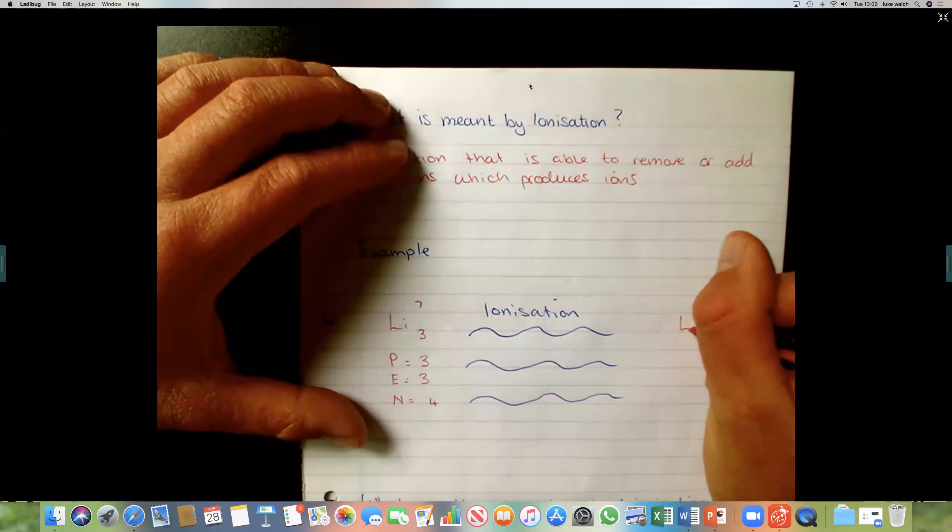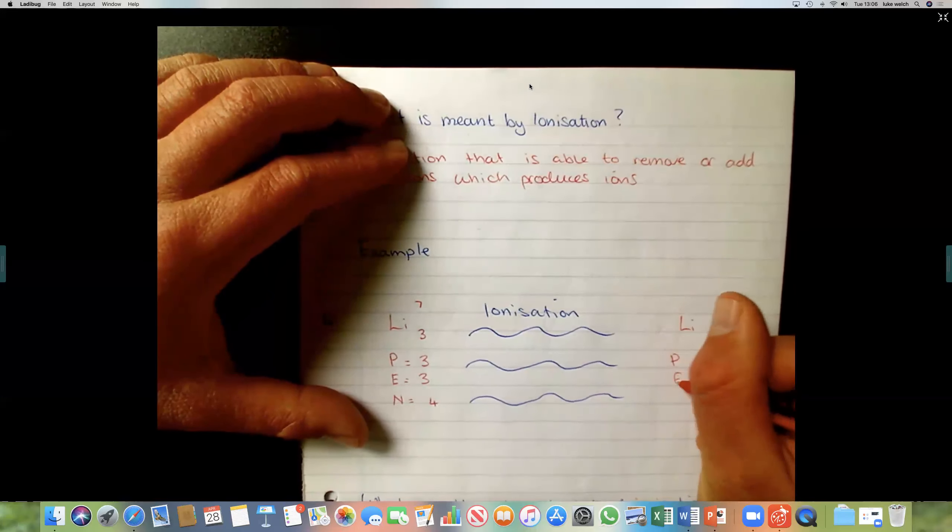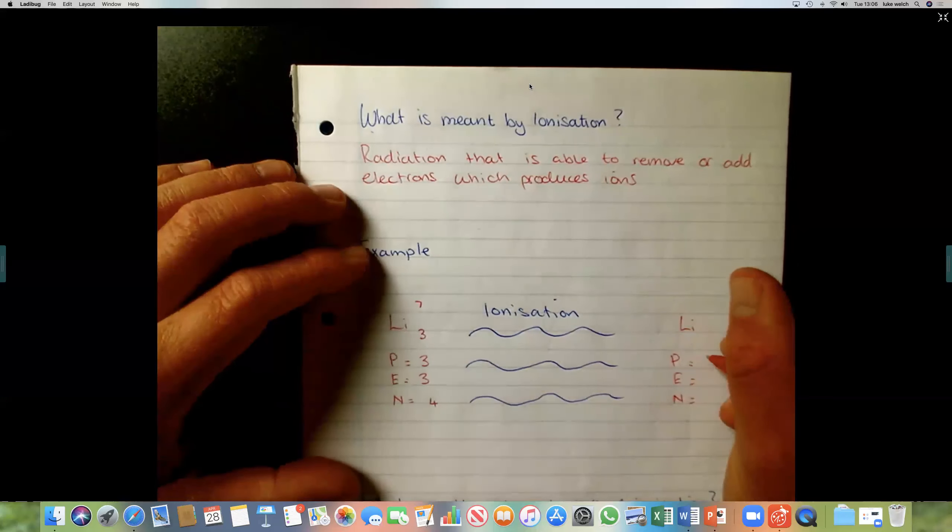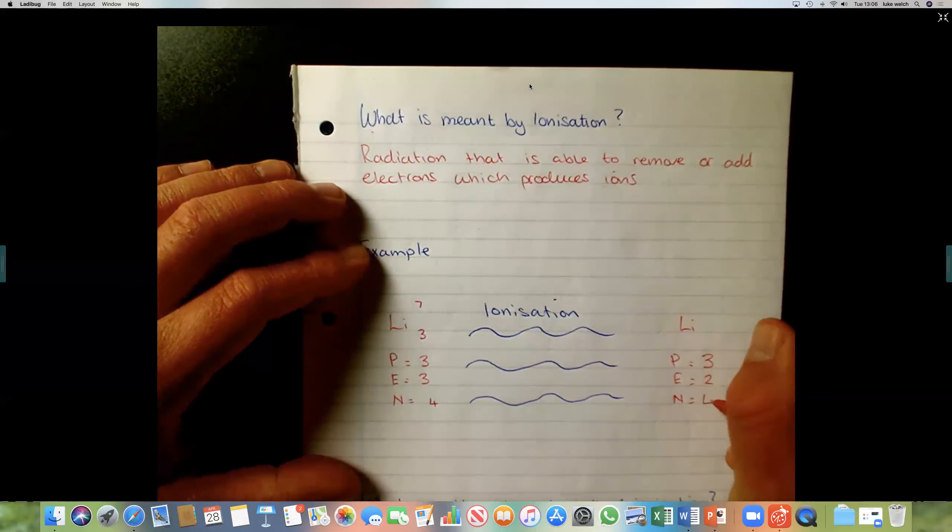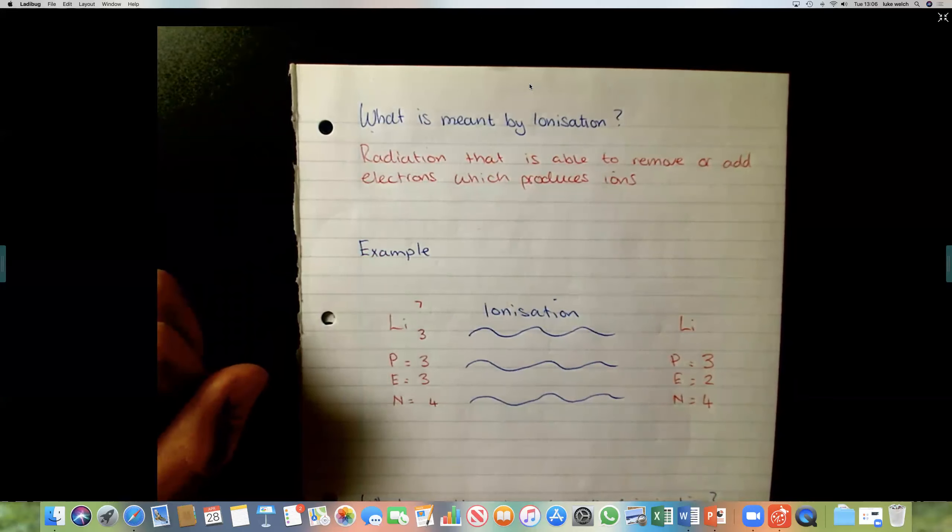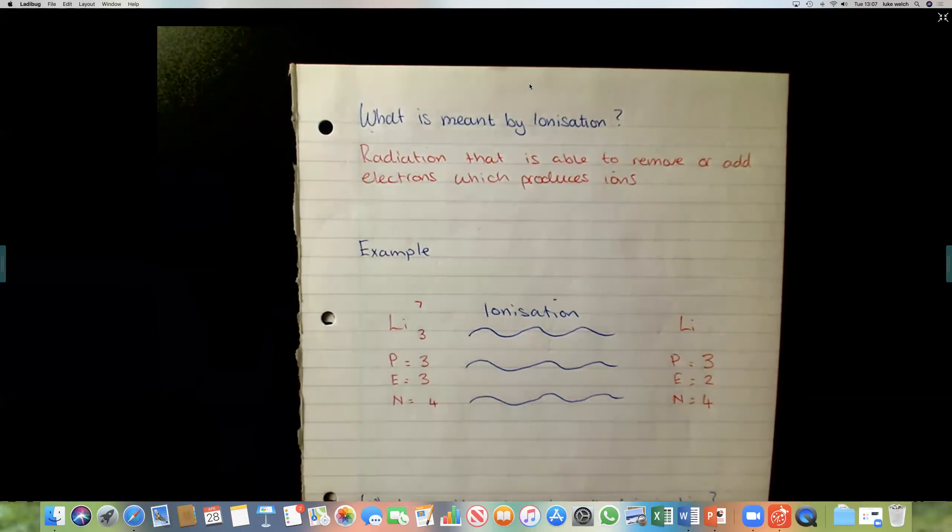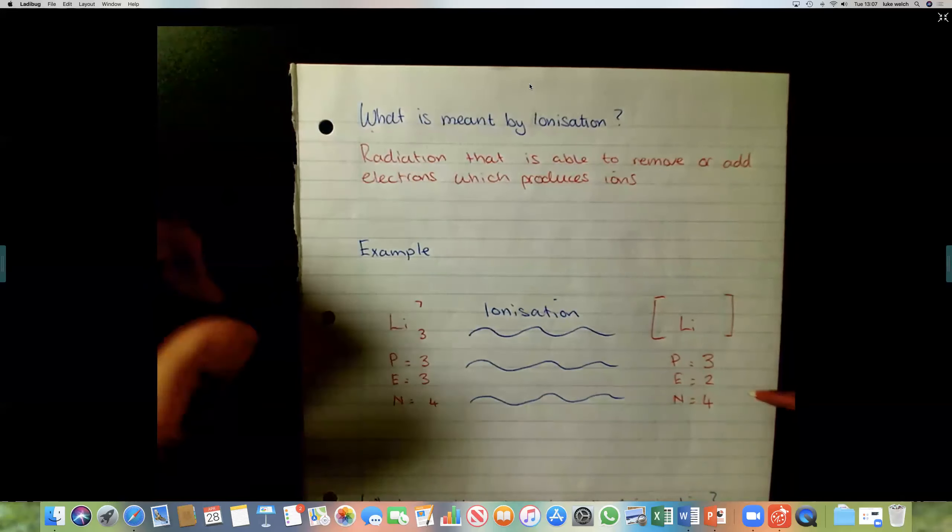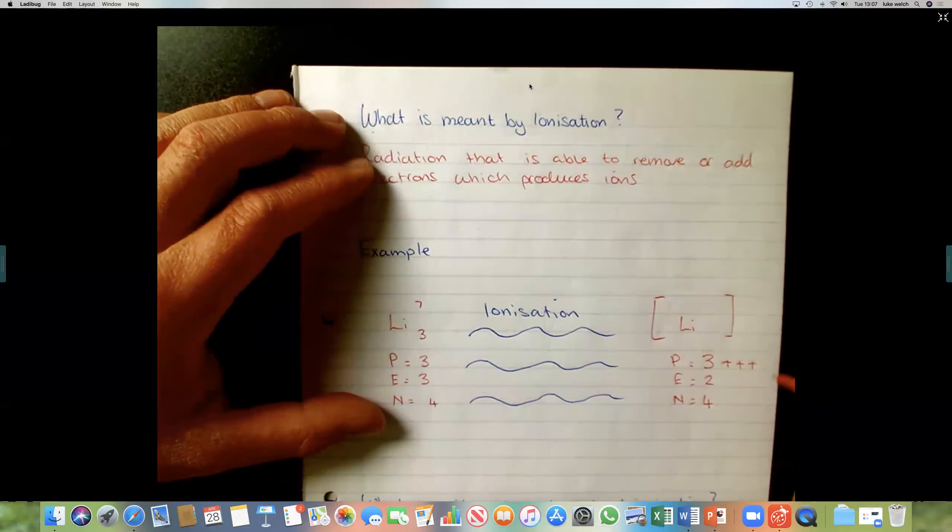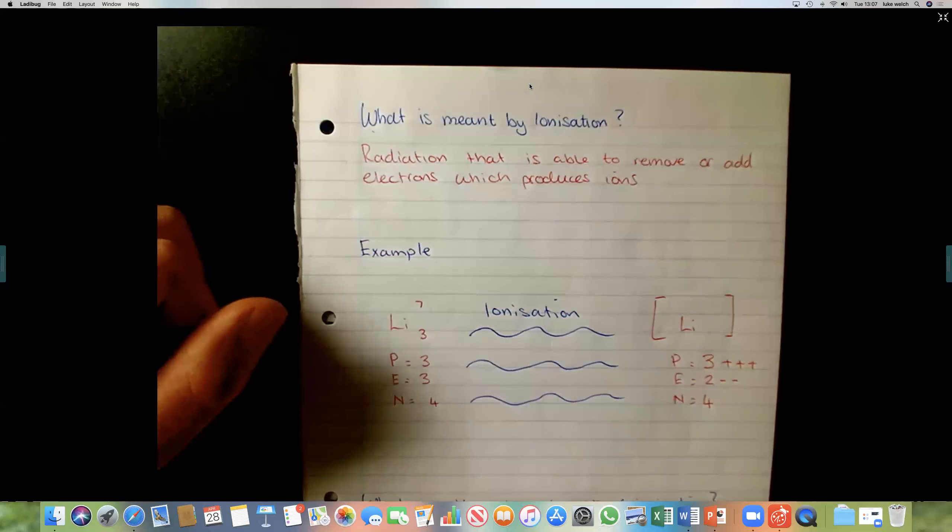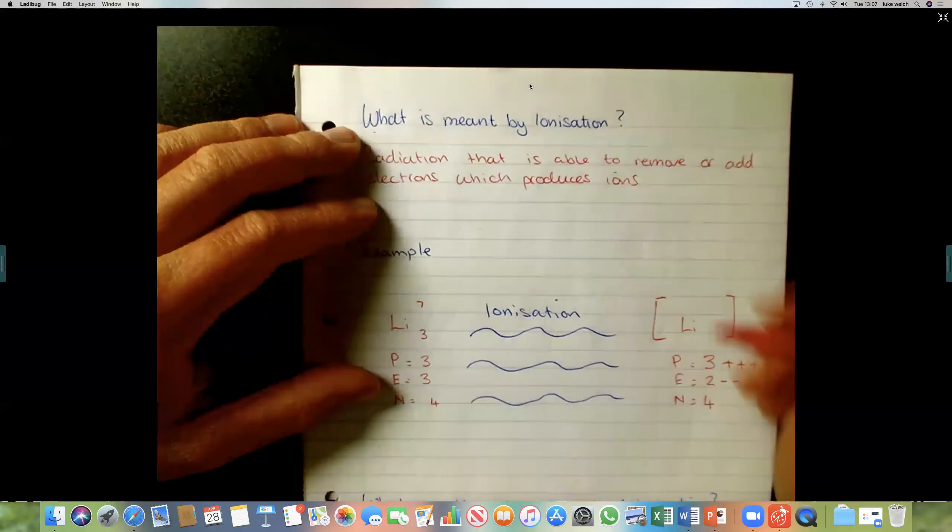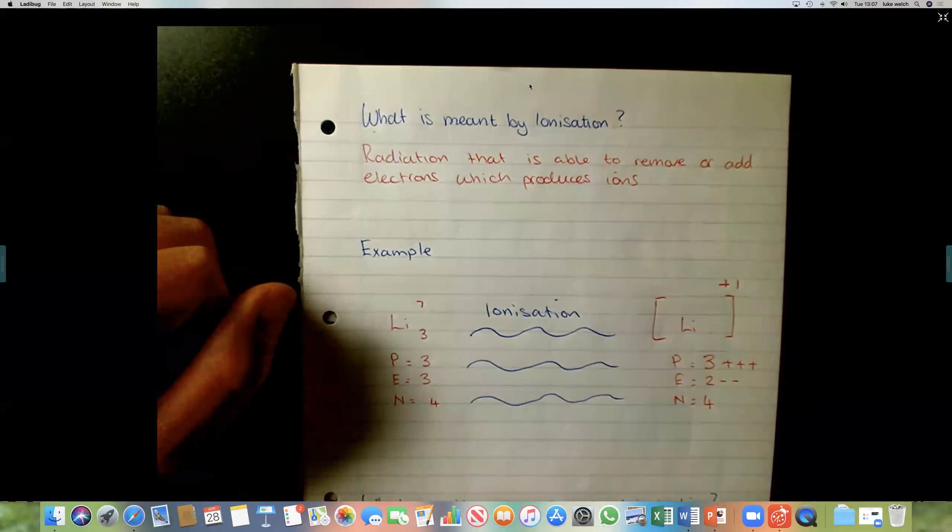So lithium, we'll write out protons, electrons, and neutrons. In order to become an ion, it's going to lose one electron. So we've got three, two, four. So anything that changes is the electrons. And now, when we're drawing ions, we need to remember to draw the charge. So we put it in a box. And what is the overall charge? Remember, protons are positive, electrons are negative. We've got one, two, three protons are negative electrons. So how many more positive protons have I got than electrons? One. So the charge is plus one.